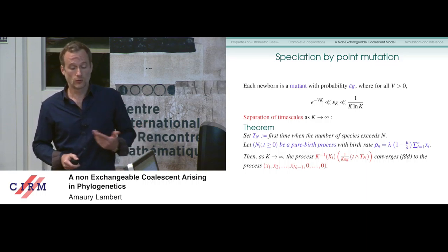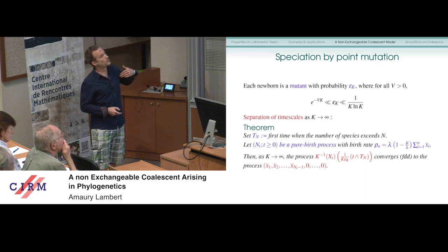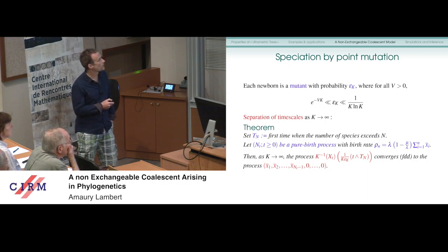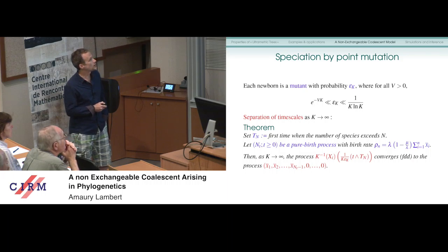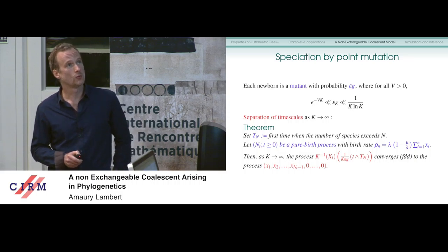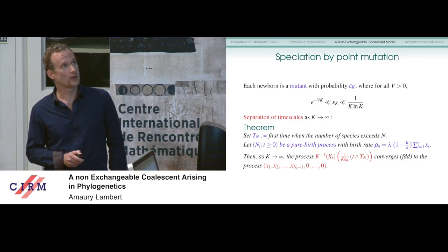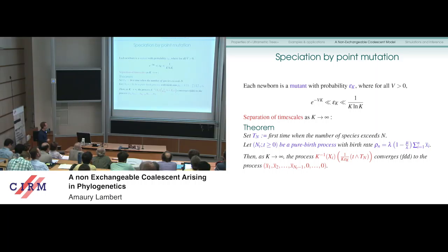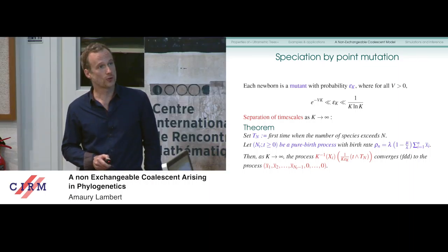So far this was for a fixed set of species. Now we assume speciation by point mutation: each newborn in each species is a mutant with probability ε_K, taking the usual Champagne scaling where ε_K is greater than e^{-VK} for some V and smaller than 1/(K log K). This gives a separation of time scales. We define T_n as the first time the number of species exceeds n, and the number of species becomes a pure birth process with an explicit birth rate.